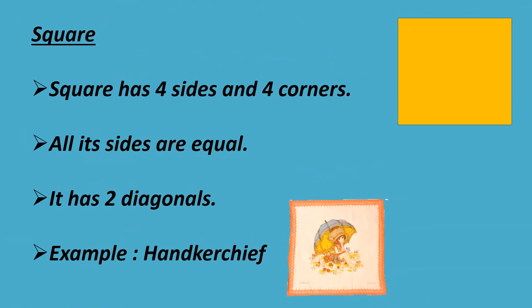Square. Square has four sides and four corners. All its sides are equal. It has two diagonals. Example: handkerchief.